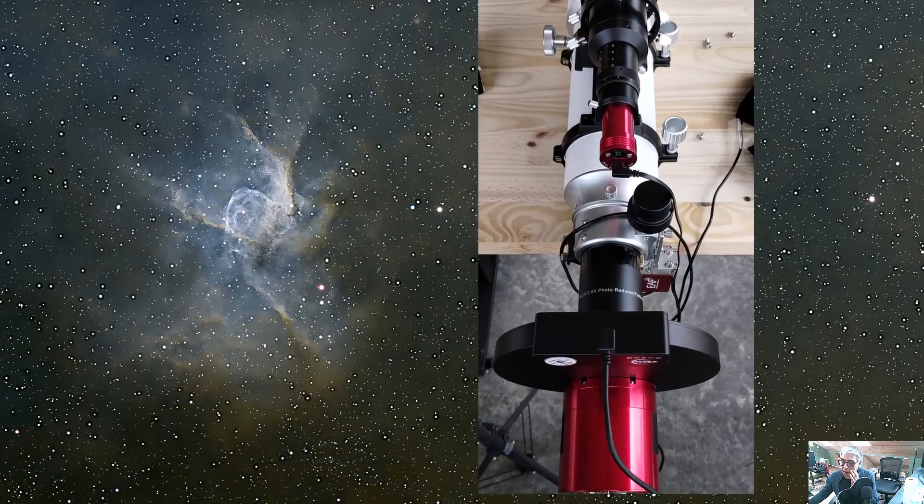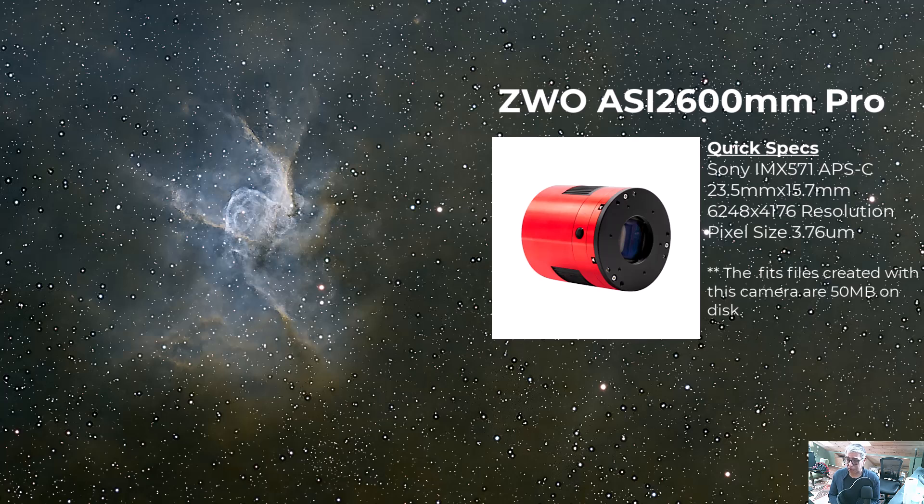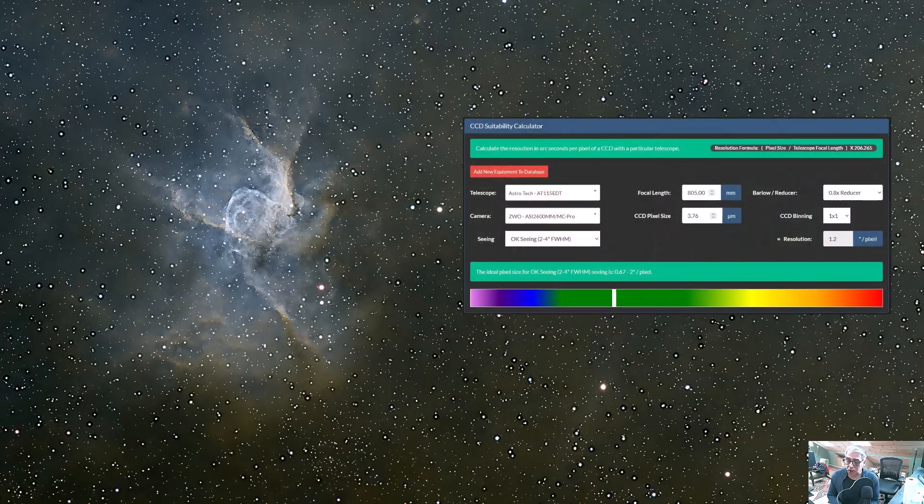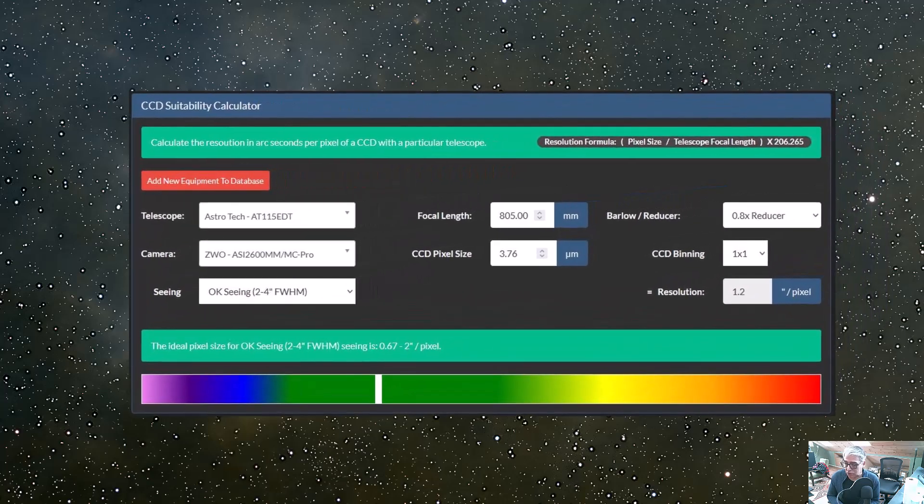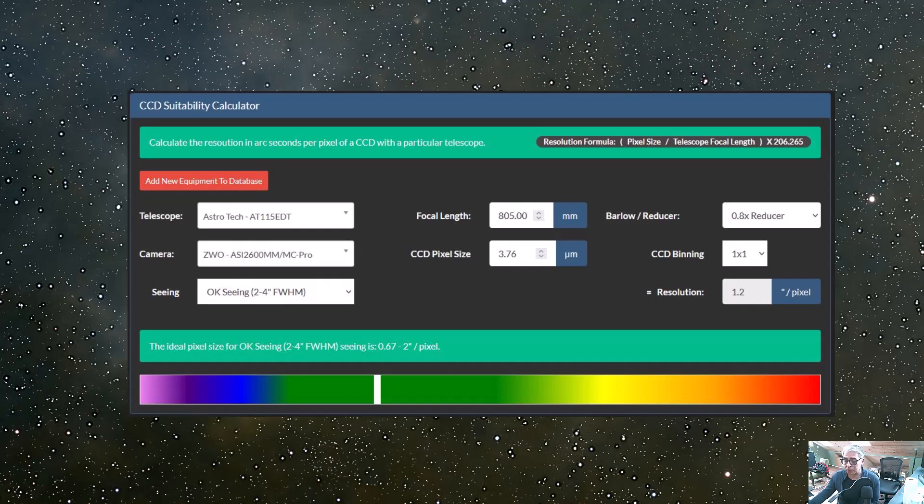I pair my AstroTek 115 EDT with a ZWO electronic accessory train. That includes the electronic autofocuser, includes the two-inch electronic filter wheels. And I use an ASI 2600MM Pro camera, which I think is an awesome astro camera. It's based on Sony's IMX 571 26 megapixel APS-C format sensor. And this combination of the telescope and this camera, you're able to achieve a nearly ideal image scale for typical seeing conditions, at least in my neck of the woods.